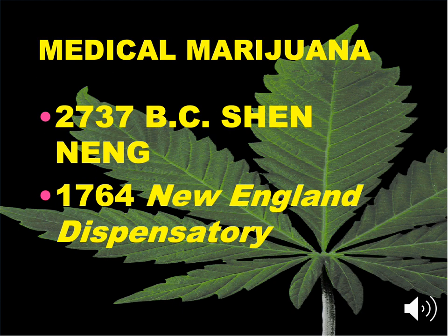In addition to industrial hemp, let's move on to the idea of medical cannabis. Who gets credit? Good old Shen Nang, 2737 BC - I accept 2800 BC on the test. This really has a whole bunch of different medical uses discussed. The 1764 New England Dispensatory basically lists this as a pharmacopoeia showing that medical cannabis was already in use when we had the colonies, before the United States was the United States.